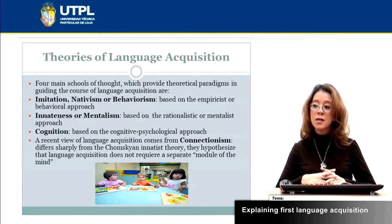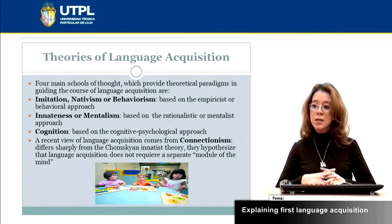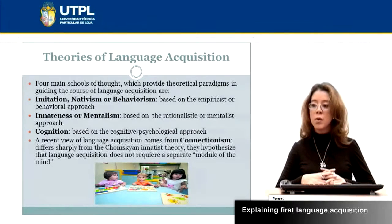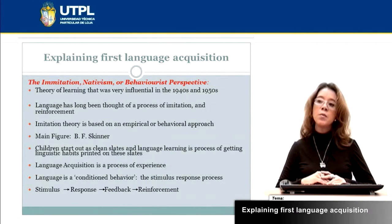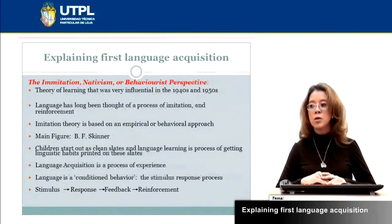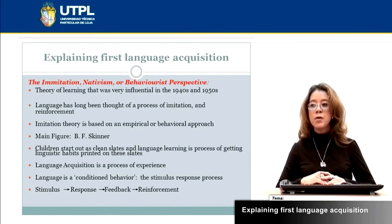From Chomsky's innateness theory, they hypothesize that language acquisition does not require a separate model of the mind. We are going to start with the first theory, which is the imitation, nativism or behaviorist perspective. This theory was very influential in the 1940s and the 1960s.